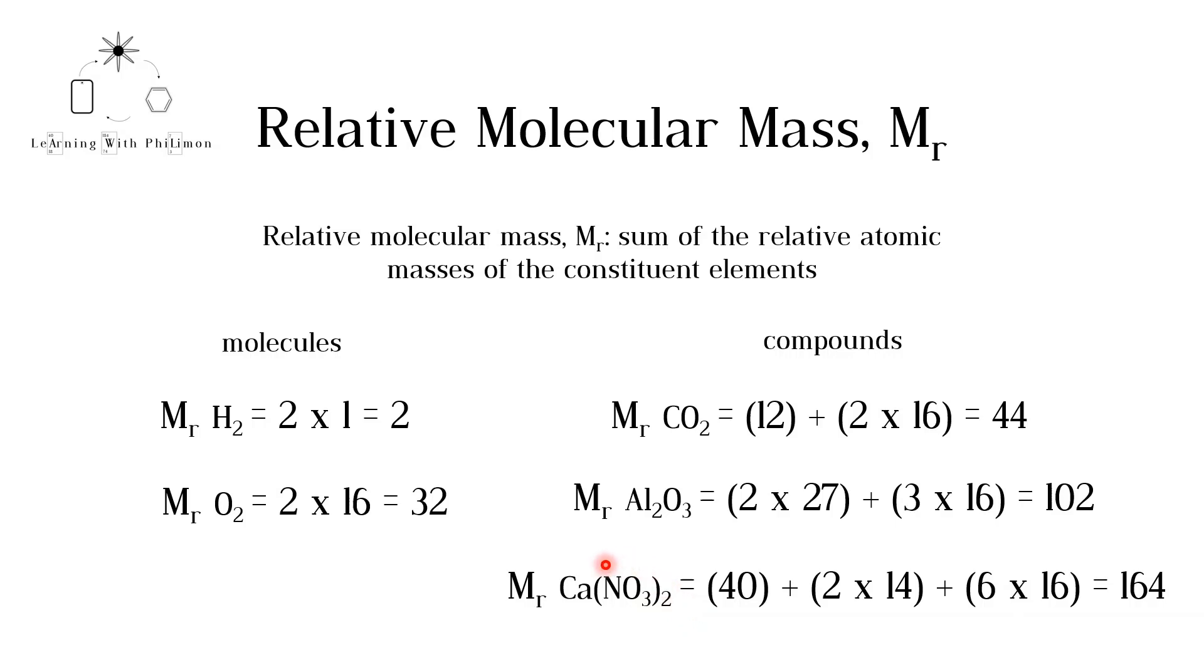Therefore, you have 2 nitrogen atoms and 2 times 3, 6 oxygen atoms. The Mr of calcium nitrate is 164.